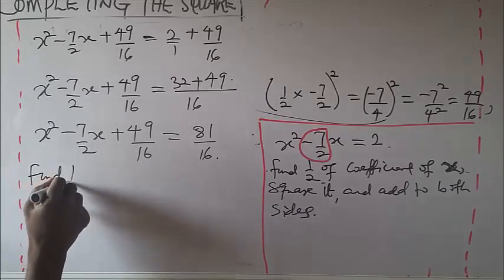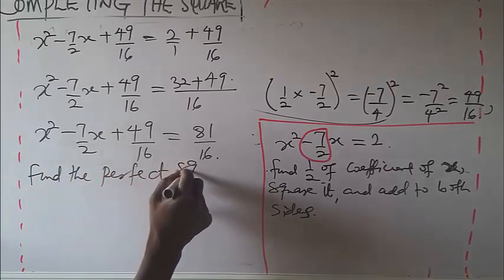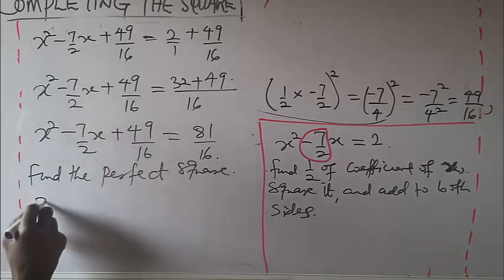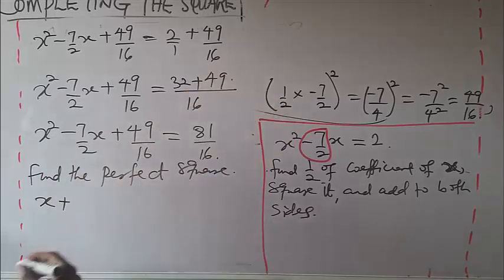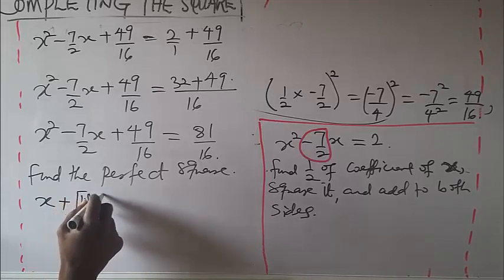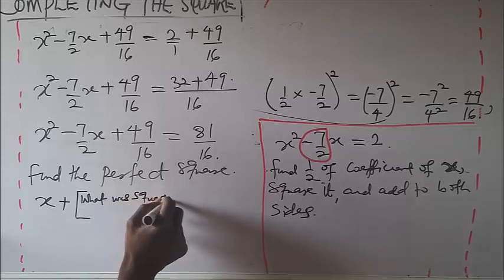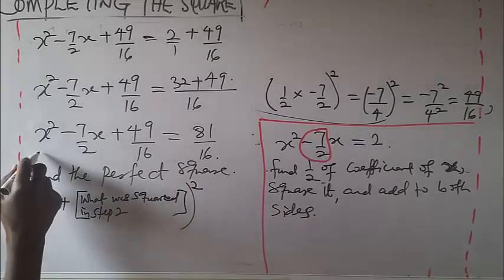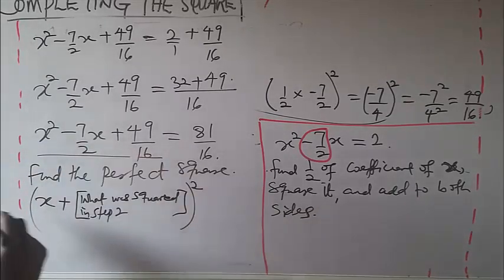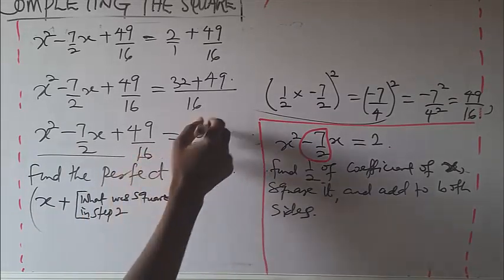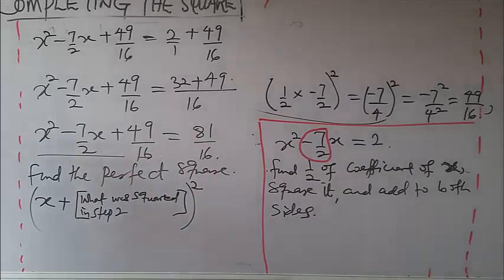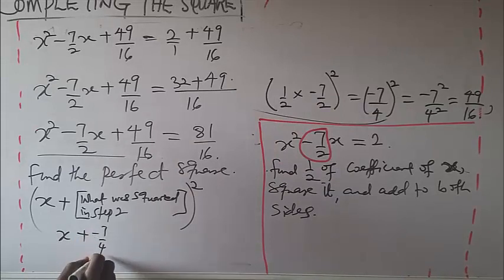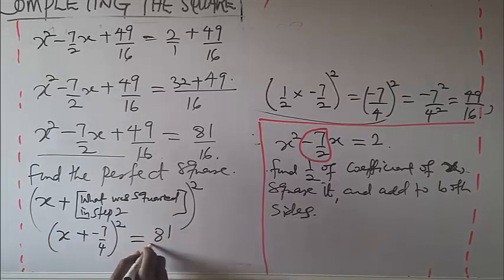Step 3: find the perfect square. The left side is a perfect square of the form (x + what)². What we squared in step 2 was minus 7/4, so x plus minus 7/4, everything squared, equals 81/16. That gives us (x − 7/4)² = 81/16.